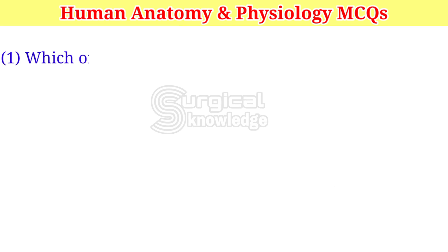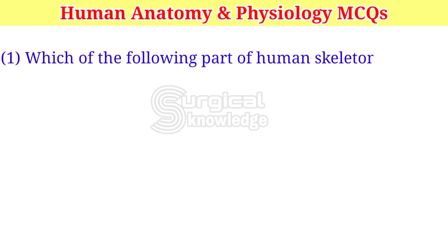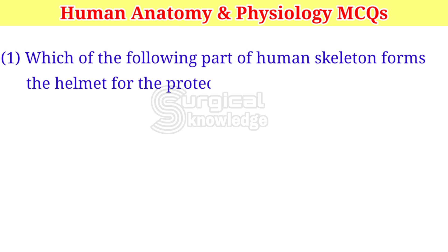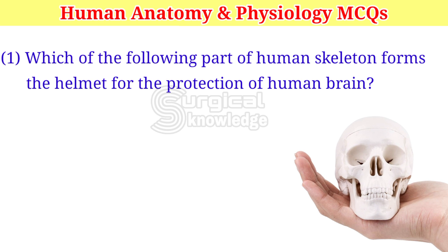Human Anatomy and Physiology MCQs. Which of the following part of human skeleton forms the helmet for the protection of human brain? A. Cranium.